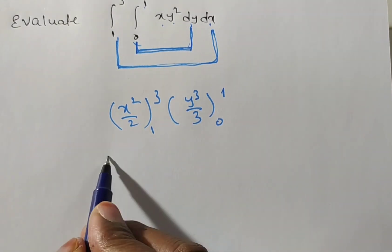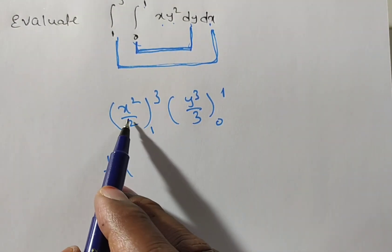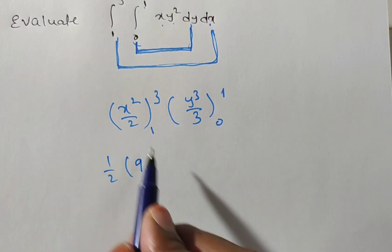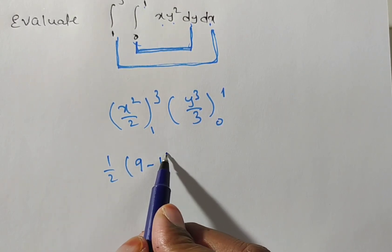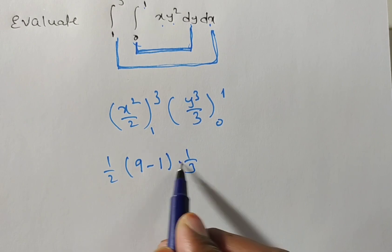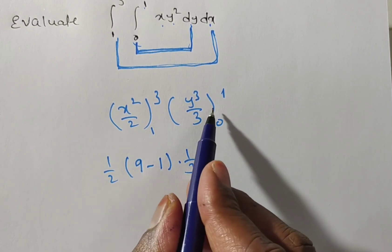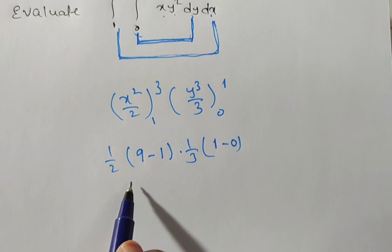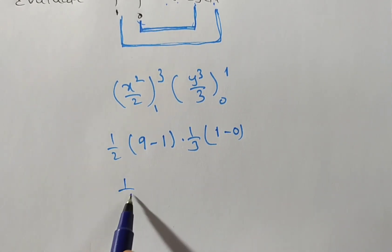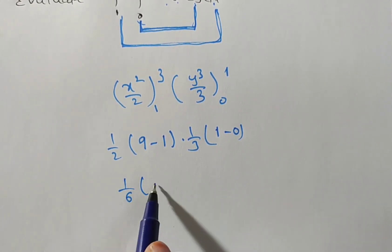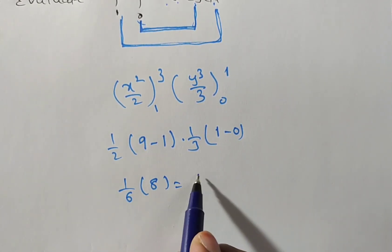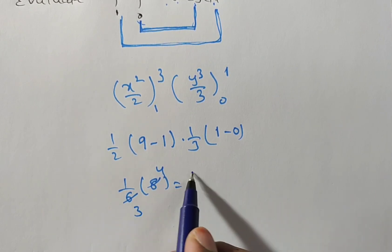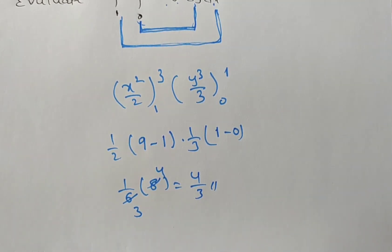For Method 1, 1/2 is factored outside. Substituting x = 3 gives 3 squared = 9, minus 1 squared = 1. For y: 1/3 is outside, substituting y = 1 gives 1 cubed = 1, minus 0. So we get 1/6 times 8, which is 8/6. Simplifying, 2 divides both: 4 by 3 is the answer.